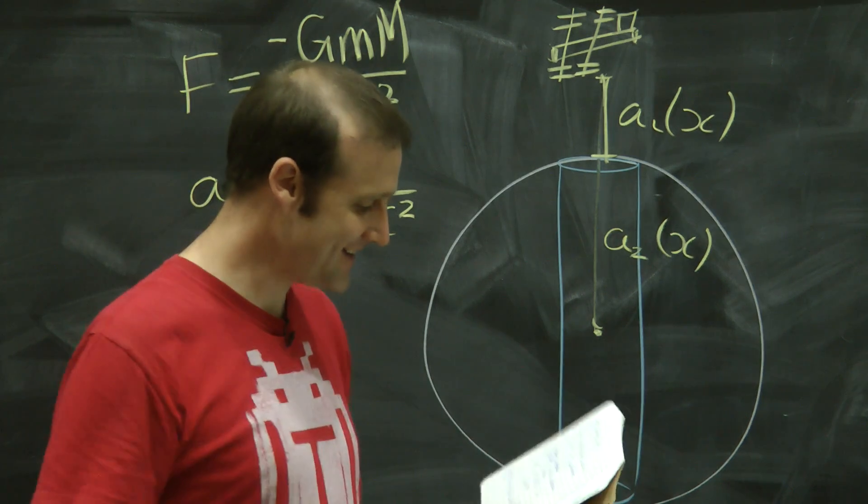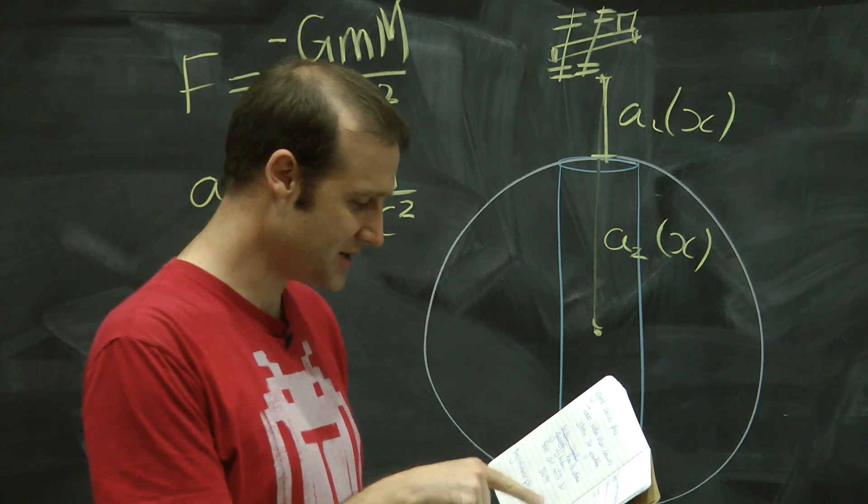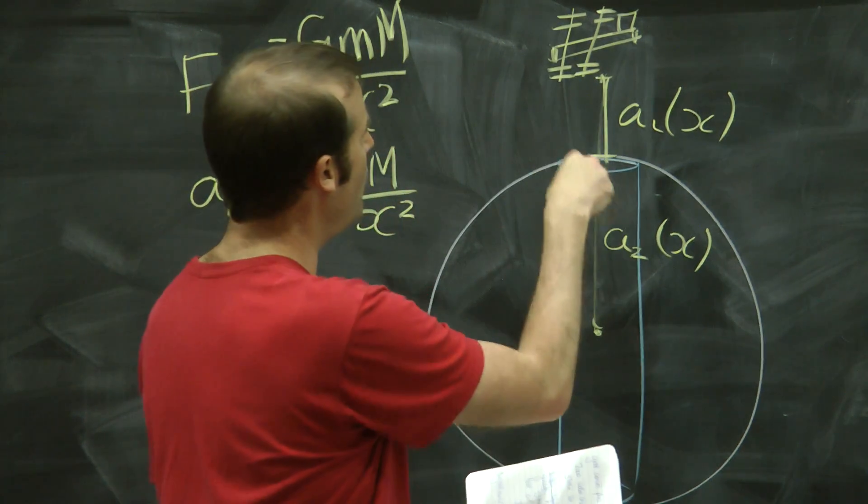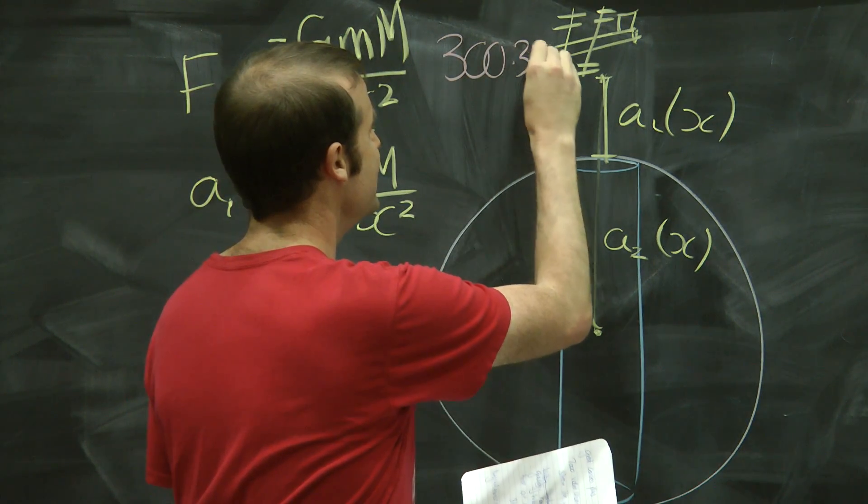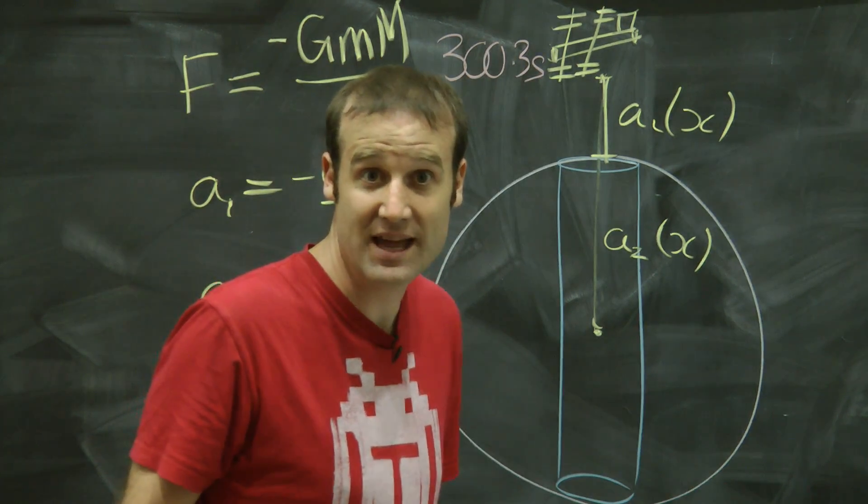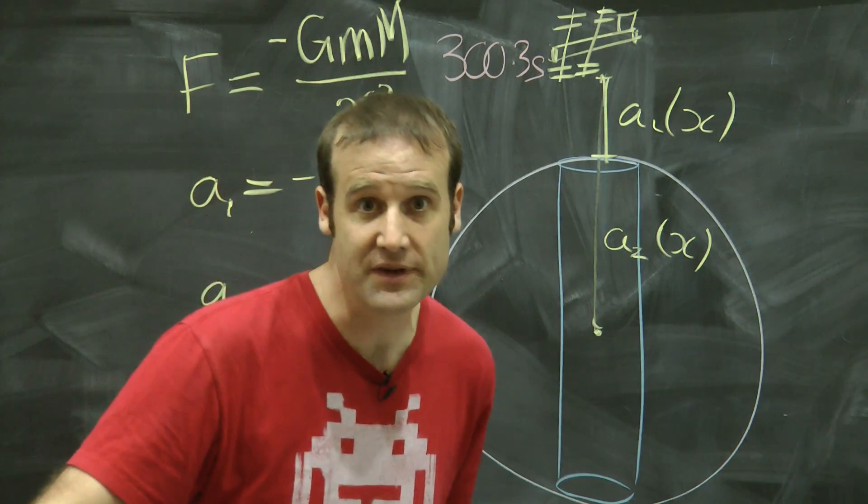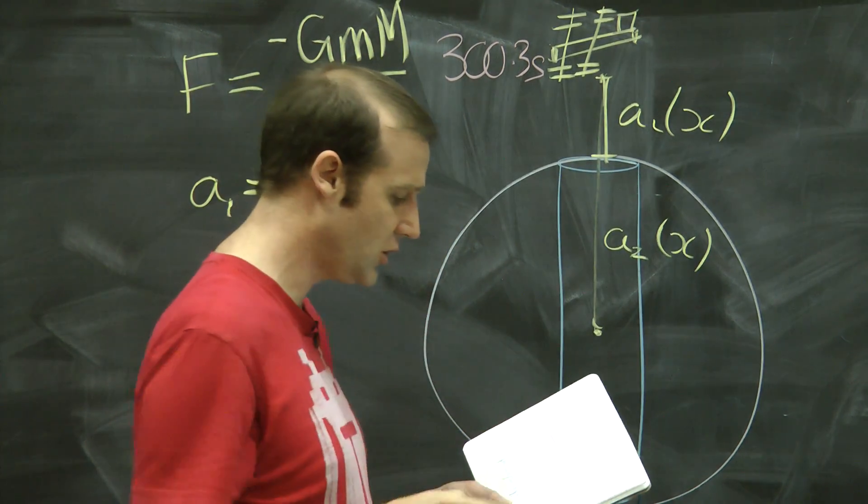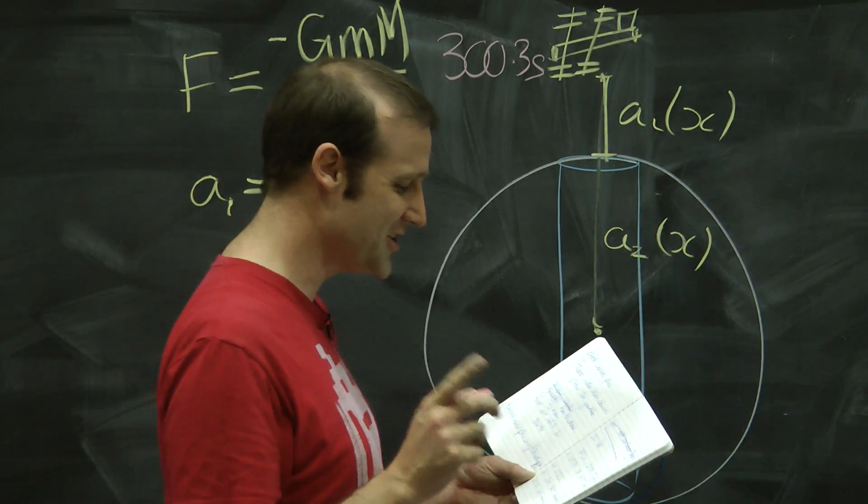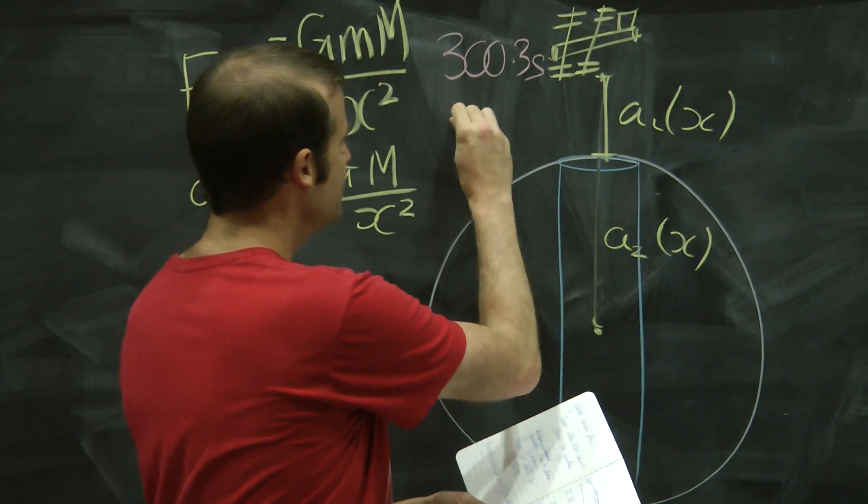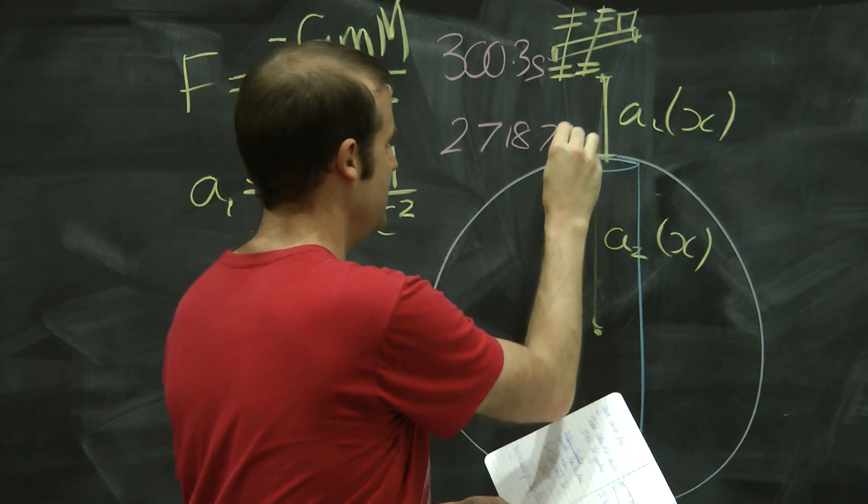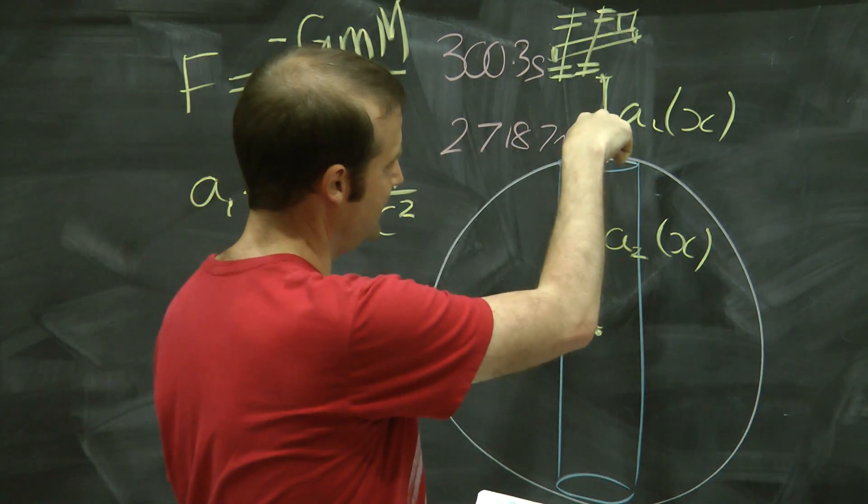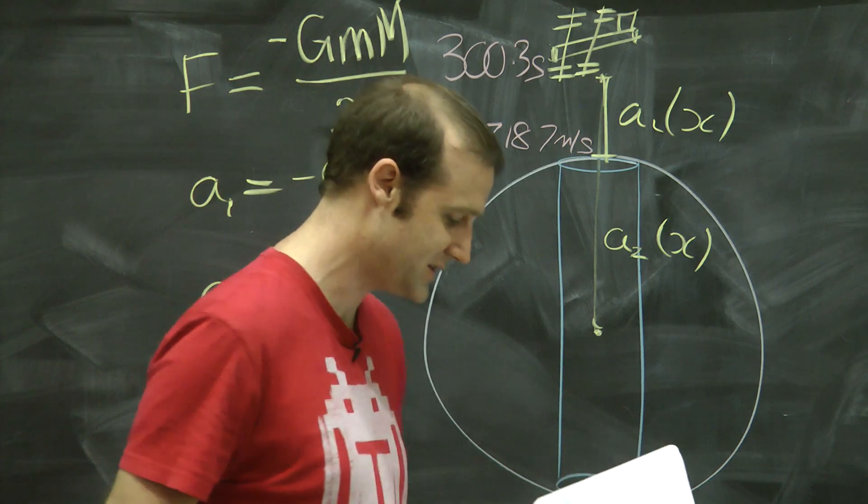If you just want the answers, my working out, I got the fall takes 300.3 seconds. So you've got pretty much exactly five minutes of plummeting through no atmosphere until you hit the beginning of your hole. And when you hit that, you're going to be going approximately 2,718.7 meters per second.